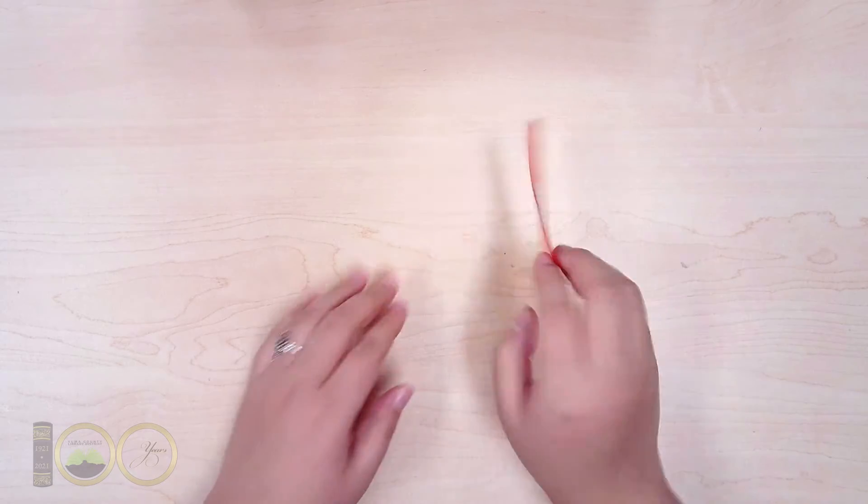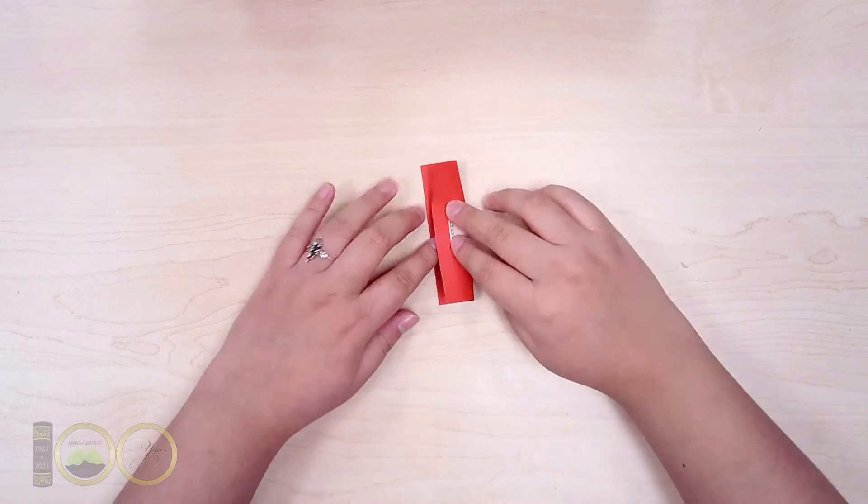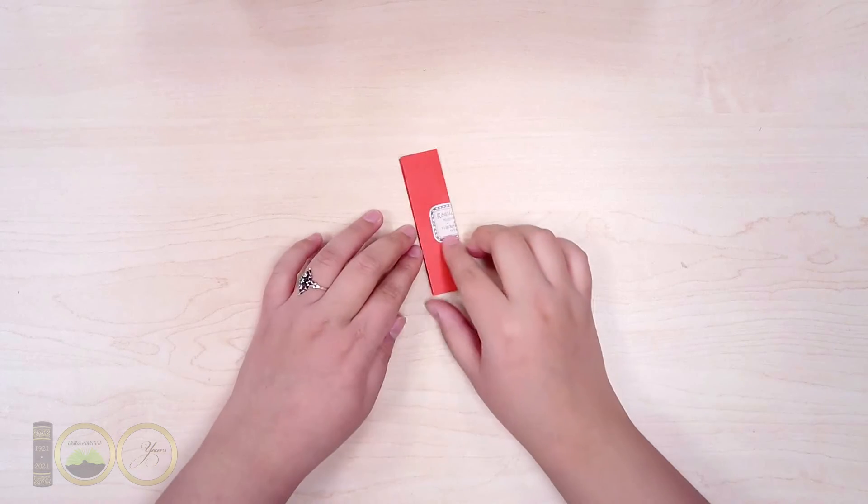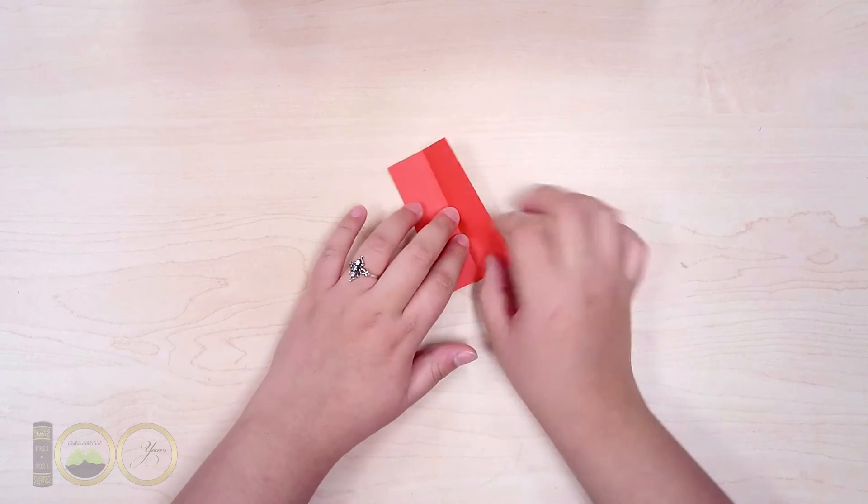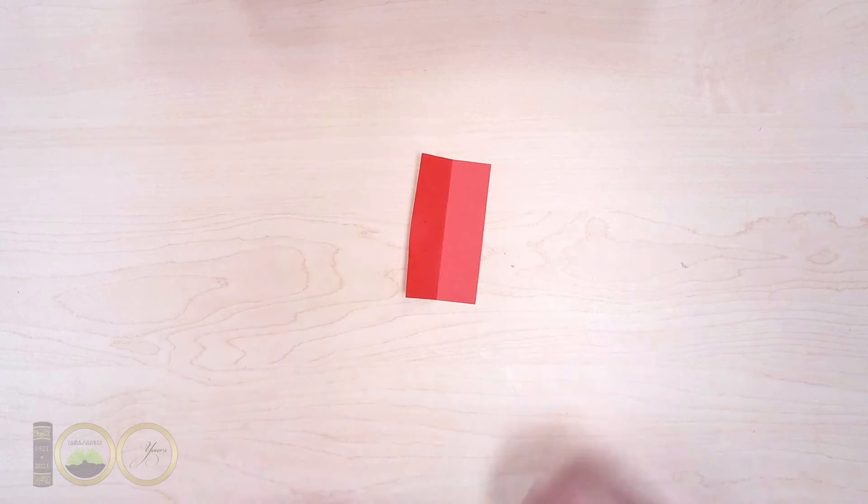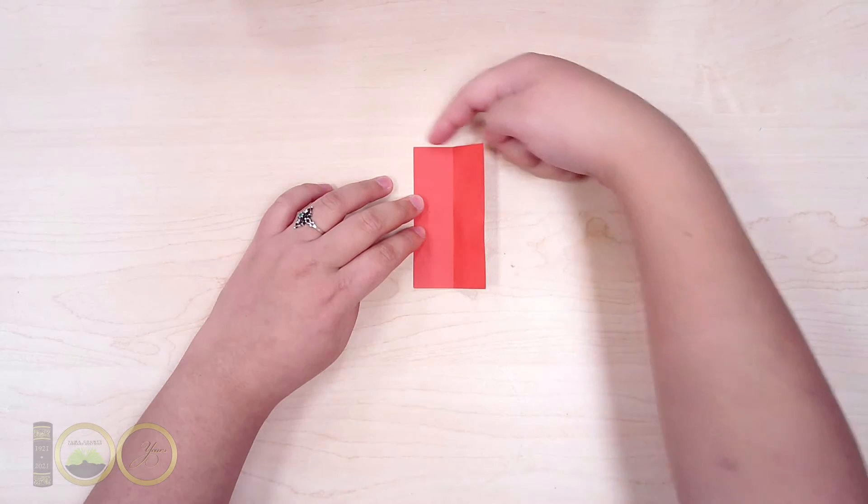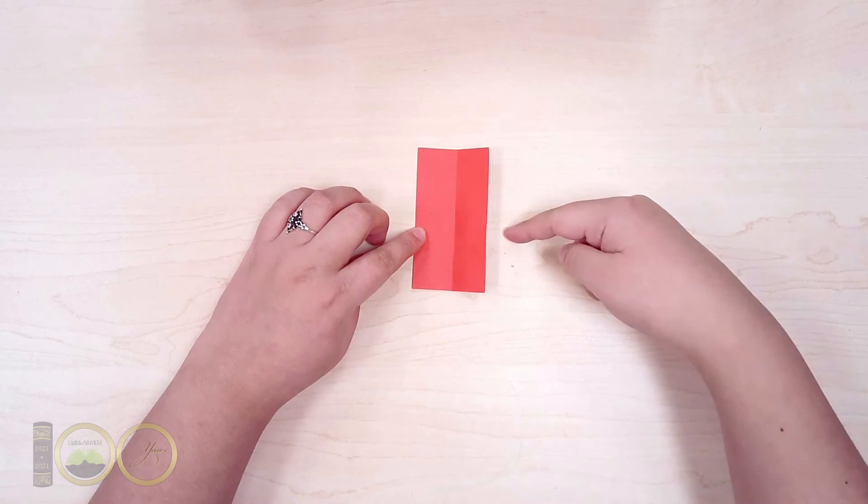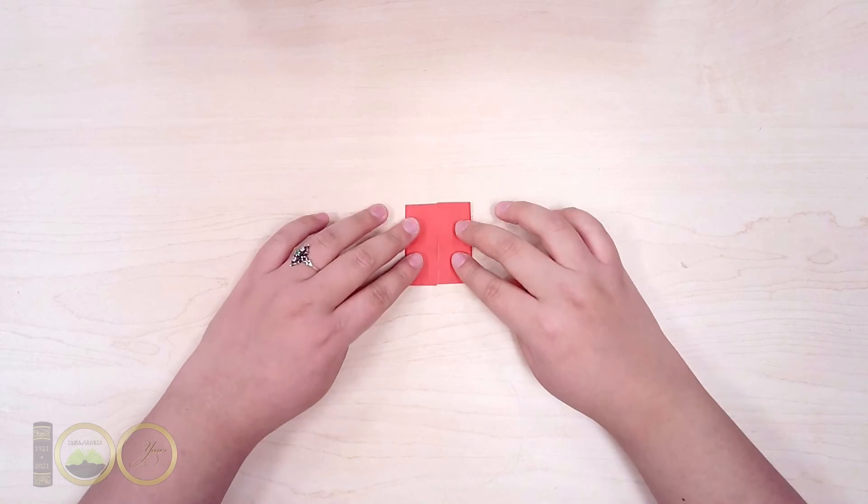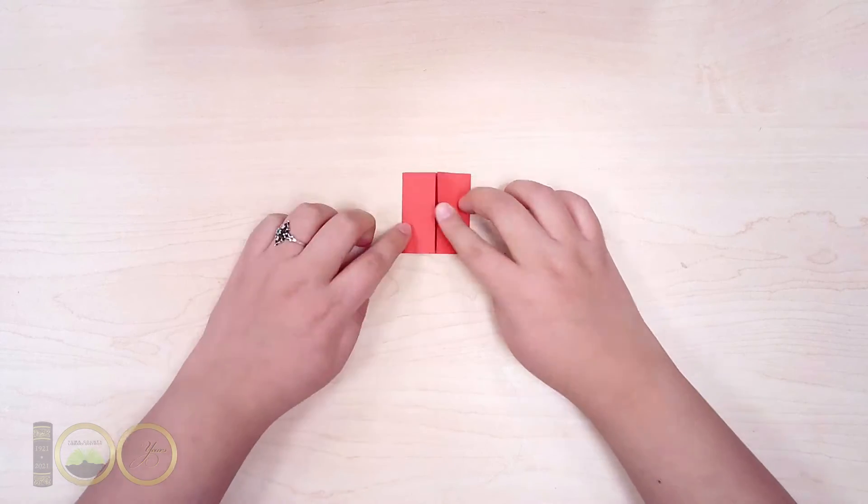Flip the red paper over and fold the rectangle vertically, then unfold. Next, bring the top and bottom edges to meet at the center. Crease them in place and unfold.